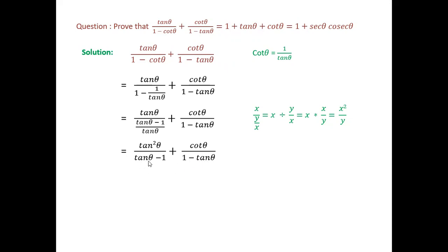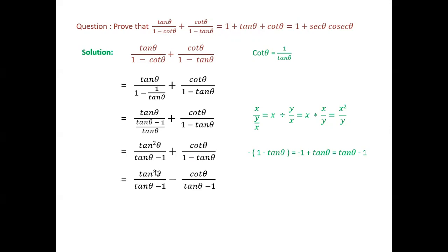Now looking at the two denominators: (tan θ minus 1) and (1 minus tan θ) — one has tan at the beginning and the other at the end. We need to make them the same. If we take a minus sign out of (1 minus tan θ), opening the bracket gives minus(minus tan θ minus 1... wait — minus 1 plus tan θ), which is just tan θ minus 1. So taking a minus sign changes the sign of the second term.